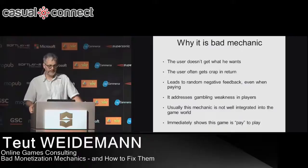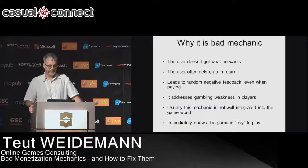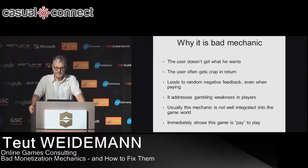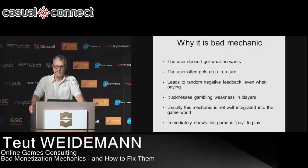Another critical thing is that the fortune wheel addresses something called gambling weakness. The human brain is weak to certain mechanics — you can ask Las Vegas or casinos how they use that weakness to get money from people, and the fortune wheel does exactly that. Also, as soon as you log into the game the fortune wheel pops up, immediately communicating this game is pay-to-play. You see the fortune wheel and you know: if you want this item, you actually have to pay to get it.